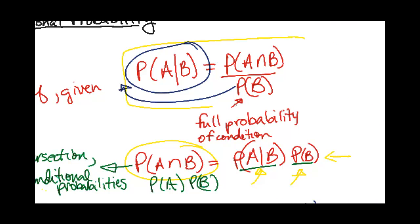This is the main formula for conditional probabilities, but if you want to find the intersection, use this formula here.